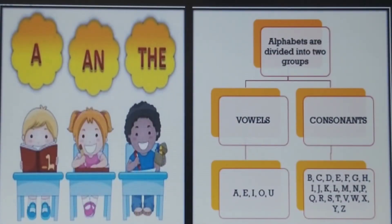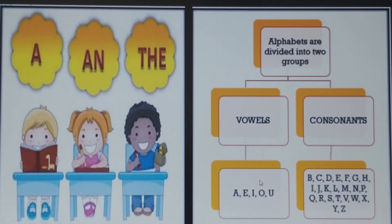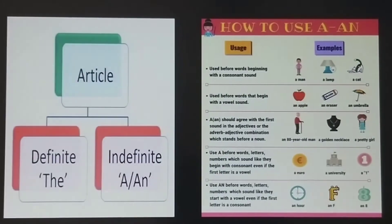Now we are going to see usage of articles — A and The. We will discuss the definite article 'the' in the next session. Alphabets are divided into two groups: vowels — A, E, I, O, U — and consonants, which are the rest of the alphabets: B, C, D, E, etc. Articles are of two types: definite article — 'the' — and indefinite article — 'a' and 'an'.